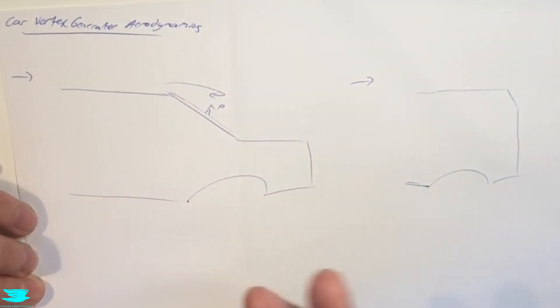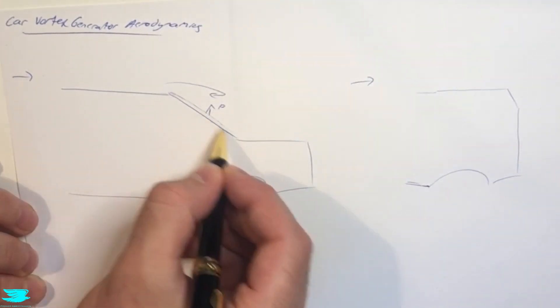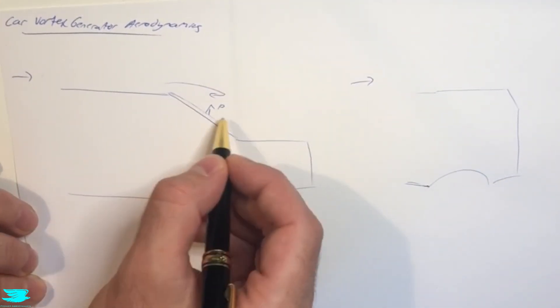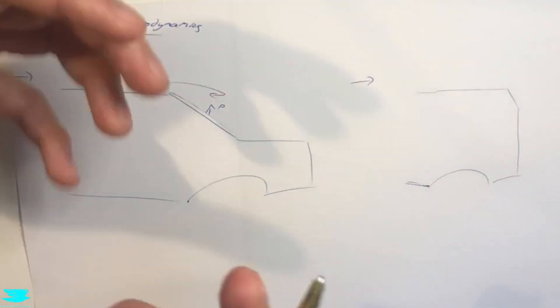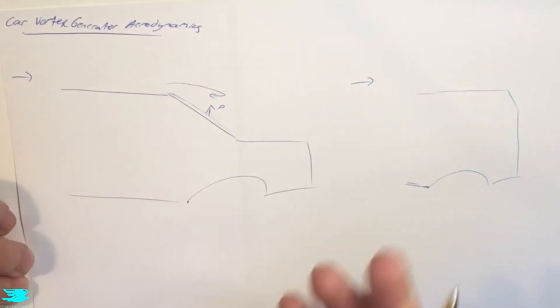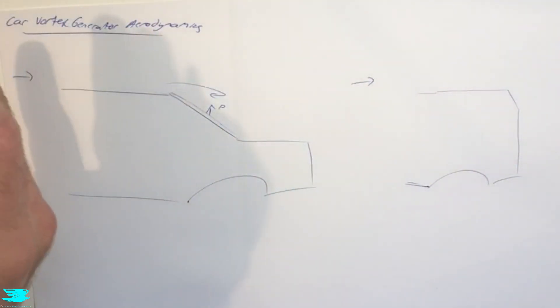That's good for the drag because if you have low pressure here, we have low pressure on the rear, high pressure on the front windshield, that creates a pressure difference and increases the pressure drag. On the other hand, if we can increase the pressure here, that neutralizes the high pressure at the front of the car and reduces the pressure drag.